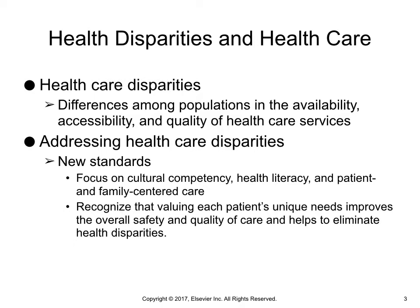According to the 2003 National Adult Assessment of Literacy, only 12% of U.S. adults are proficient in obtaining, processing, and understanding basic health information and services needed to make appropriate health decisions. The Joint Commission, the National Quality Forum, and the National Commission on Quality Assurance are among the influential organizations that have responded by implementing new standards focused on cultural competency, health literacy, and patient and family-centered care. These standards recognize that valuing each patient's unique needs improves the overall safety and quality of care and helps to eliminate health disparities.